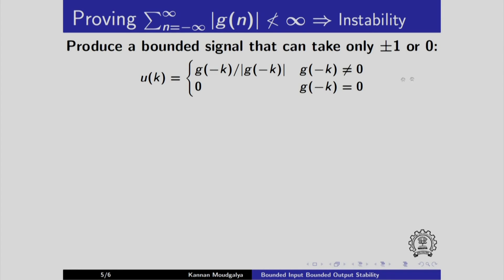We construct it as follows. When g(-k) is not equal to 0, we construct u(k) as the absolute value dividing the value. As a result, suppose g(-k) is negative, then this will be minus 1. Whereas, if g(-k) is positive, then it will be plus 1. So, it will take minus 1 or plus 1. If g is negative, then we will get minus 1. If it is positive, we will get plus 1. So, you can think of this as the signum function. And it is 0 when it is 0. When g is 0, we take this u to be 0.